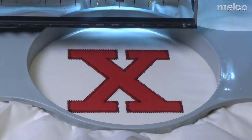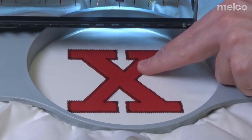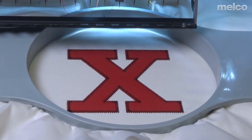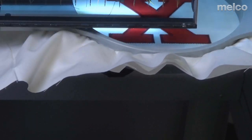Now that it's stopped for that second applique stop that I have in there, I just check and make sure everything's caught. It looks good. So I'm going to go ahead and press the green button. It's going to go back in and sew the rest of the design.